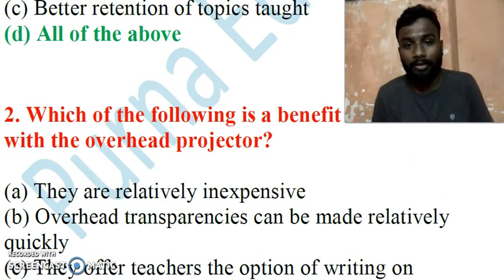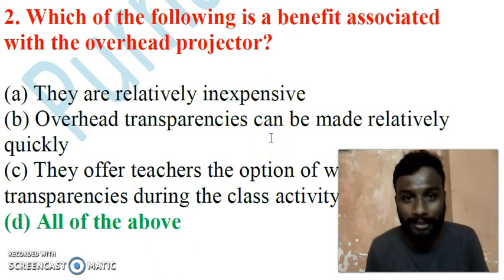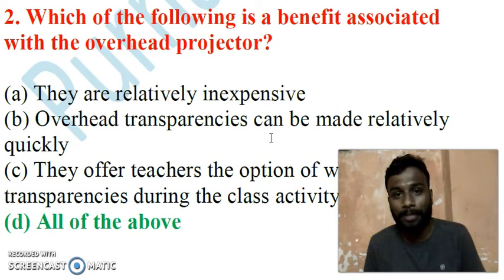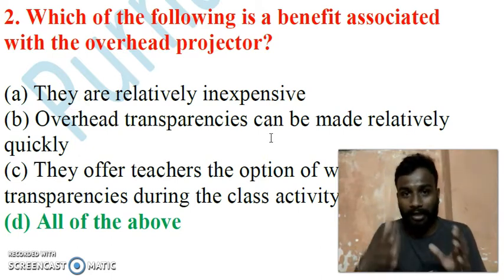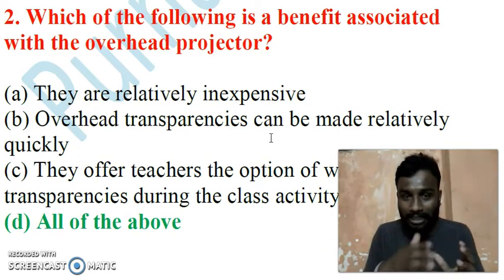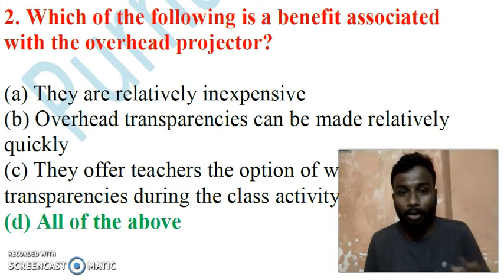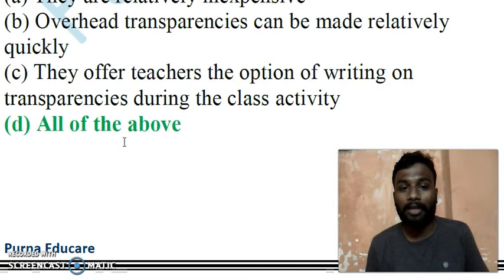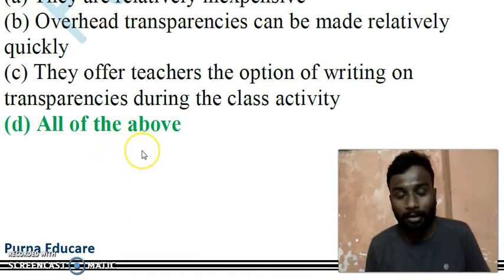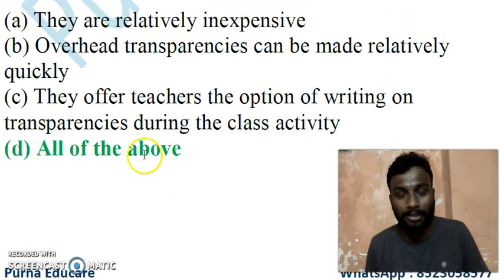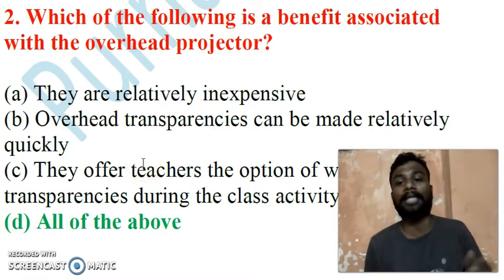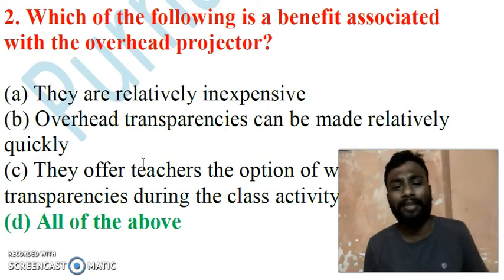Question 2: Which of the following is a benefit associated with the overhead projector? An overhead projector is a device where written content on a transparent body is reflected on the screen using light rays. Option A: it is relatively inexpensive. Option B: transparencies can be made relatively quickly. Option C: teachers can write on the transparencies during class. Option D: all of the above. All options apply to the overhead projector, so Option D is correct.